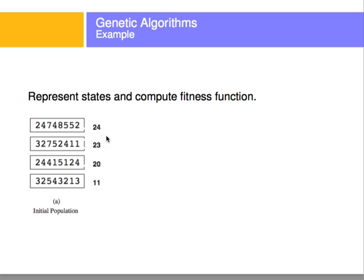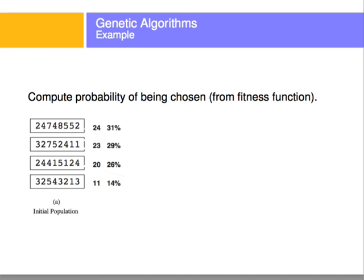Then we compute the probabilities of any of these individuals being chosen. To compute those probabilities, we add all the fitness scores: we end up with a total of 77. Then we divide each fitness score by 77 — basically normalizing these scores to get a probability. We end up with a 31% probability for the first individual, 29% for the second, 26% for the third, and 14% for the fourth. That is just one method of getting the probabilities.